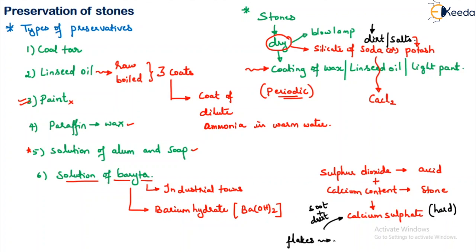So, this process is called as what? Sulfate attack. This happens in the region where acids are released into the atmosphere. So, using this bartha solution will stop the sulfate attack from happening and will preserve the stone. So, these are some of the types of preservative which we use on stone. I hope the lesson is clear to you. Thank you.